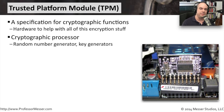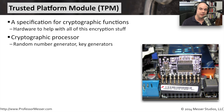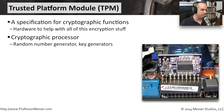One of the things on a TPM is a cryptographic processor. This is a processor built as a random number generator, and it has key generators built in. A lot of the heavy CPU usage done with any type of cryptography uses some of these standard processes, so having a piece of hardware that can handle that rather than the main CPU of your computer is going to be helpful.